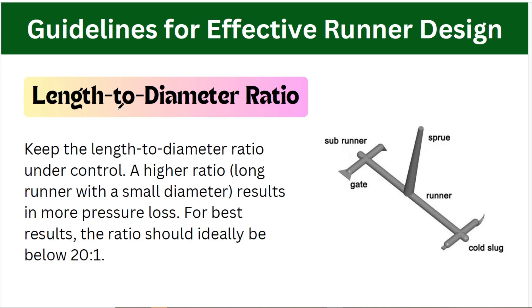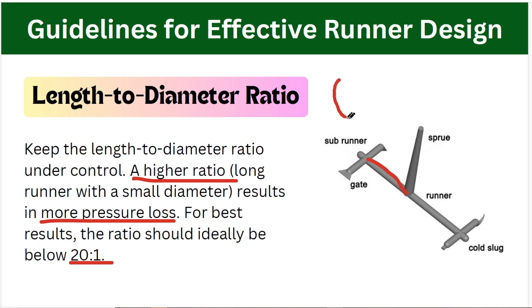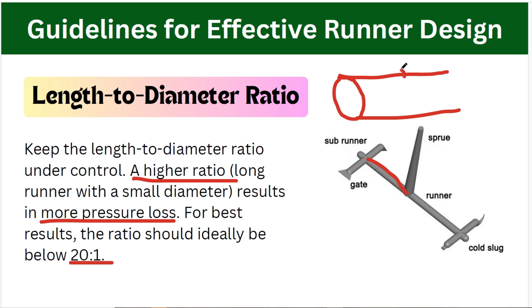Next is the length-to-diameter ratio. We need to keep this ratio under control. A higher ratio — meaning a long runner with a small diameter — results in more pressure loss. For best results, the ratio should ideally be below 20:1. The length should be as short as possible, and the diameter should be set based on viscosity requirements and part size.